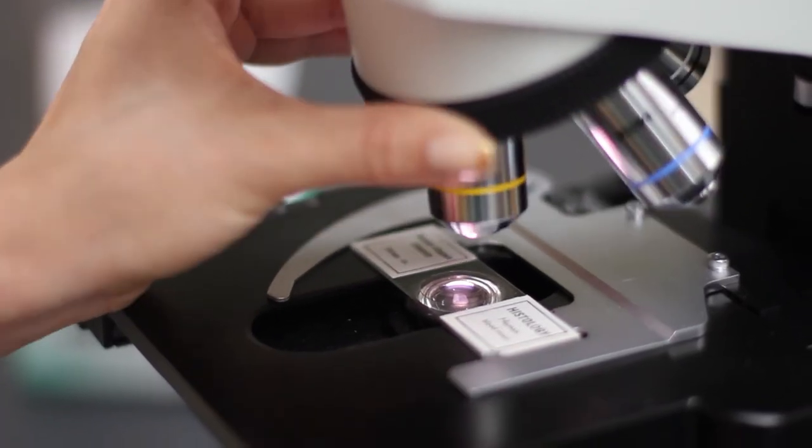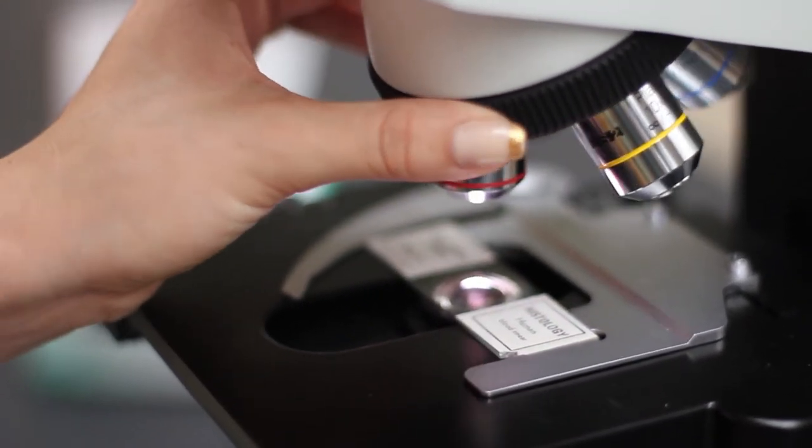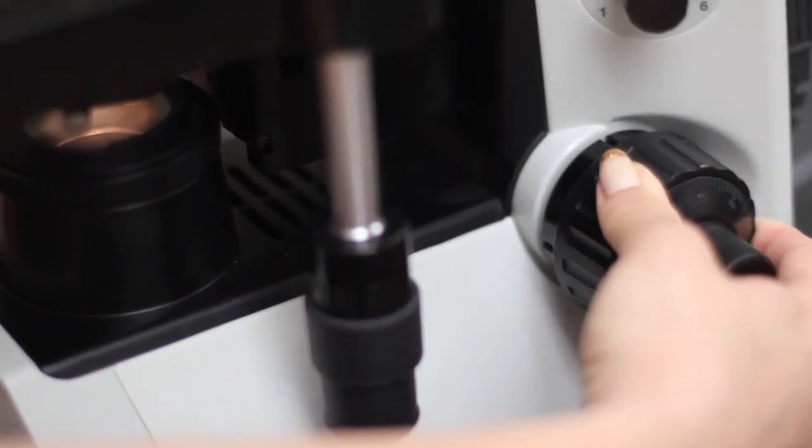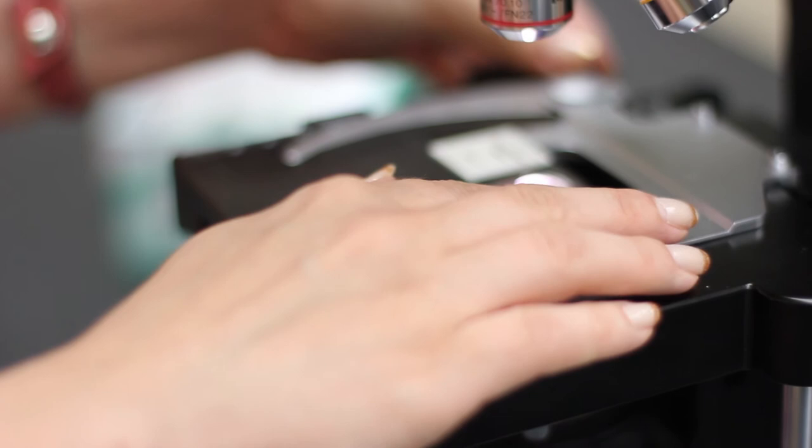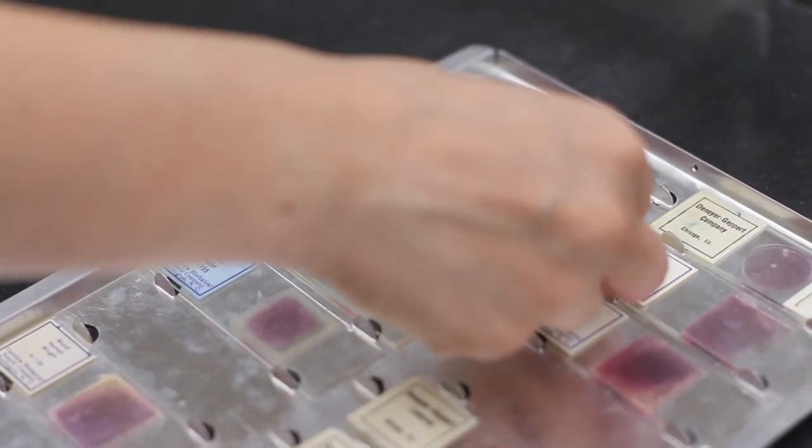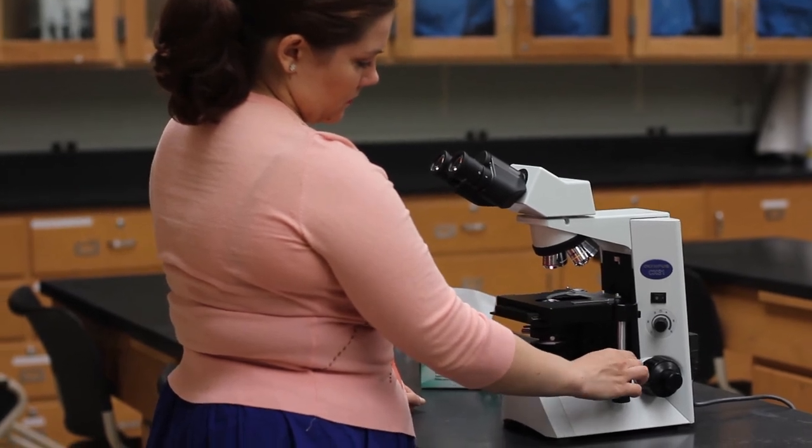When you are finished using the microscope for the day, rotate the revolving nose piece so the scanning objective lens is in place. Lower and move the stage back towards the arm of the microscope. Remove slides and return them to the appropriate slide box. Move the stage back towards the arm using the x and y adjusters.